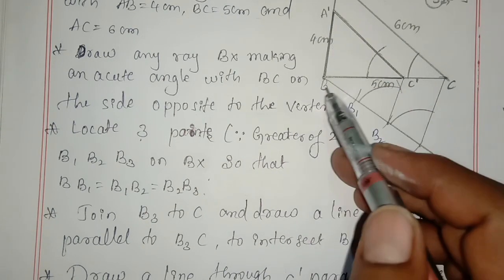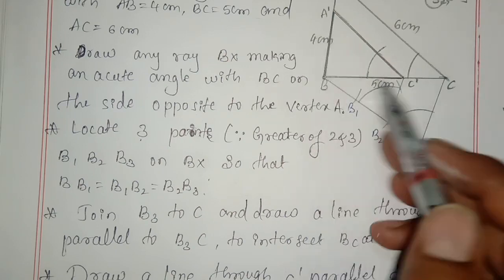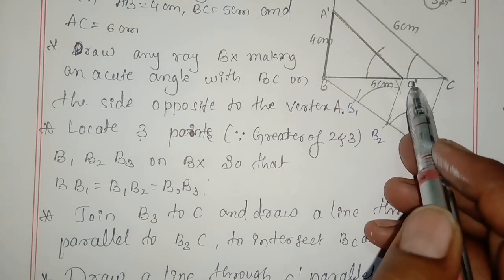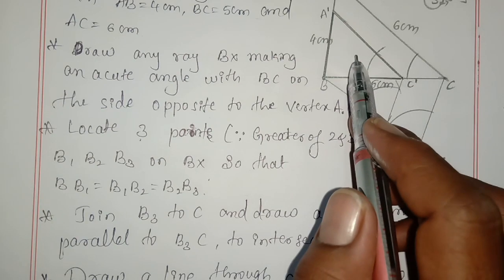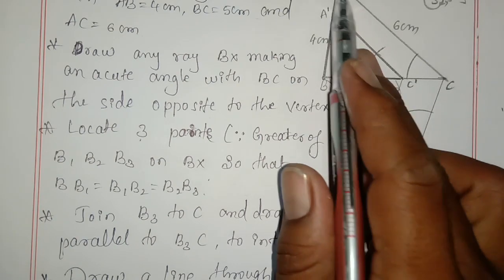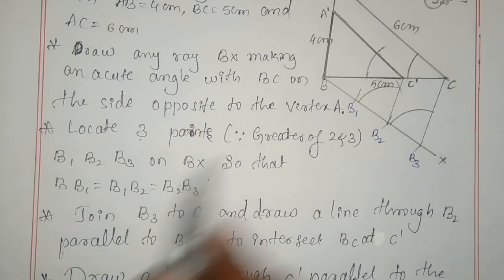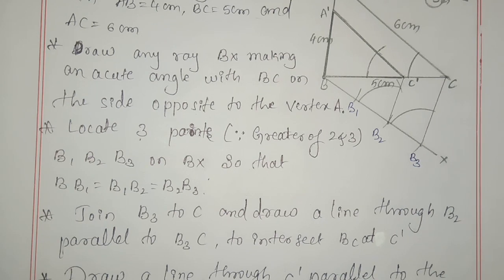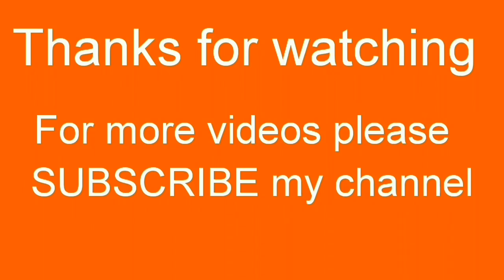After that, you get A'BC', which is the required triangle — that is, triangle A'BC' is two by three of triangle ABC. I hope you understand this. Thanks for watching. Please subscribe to my channel.